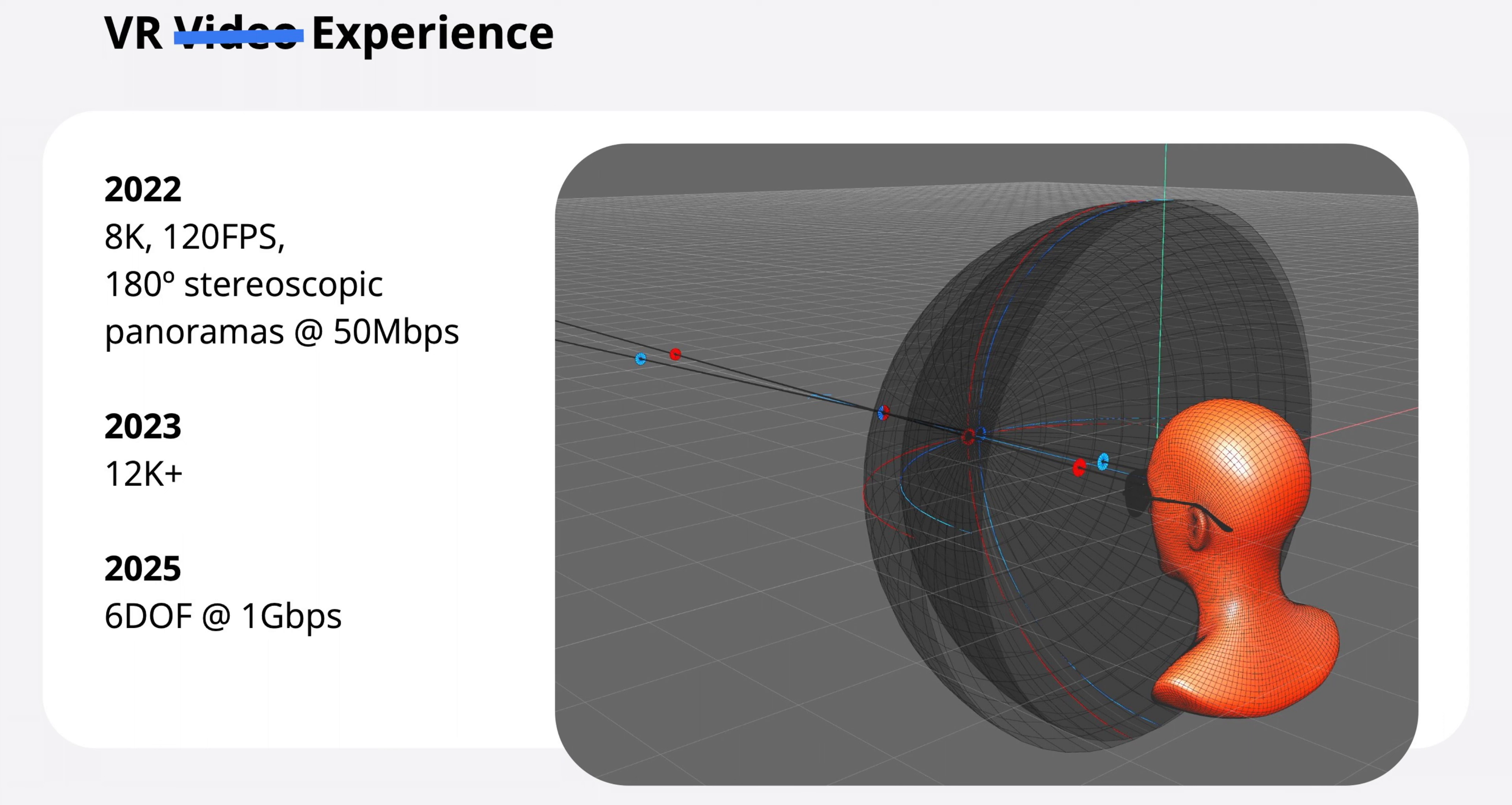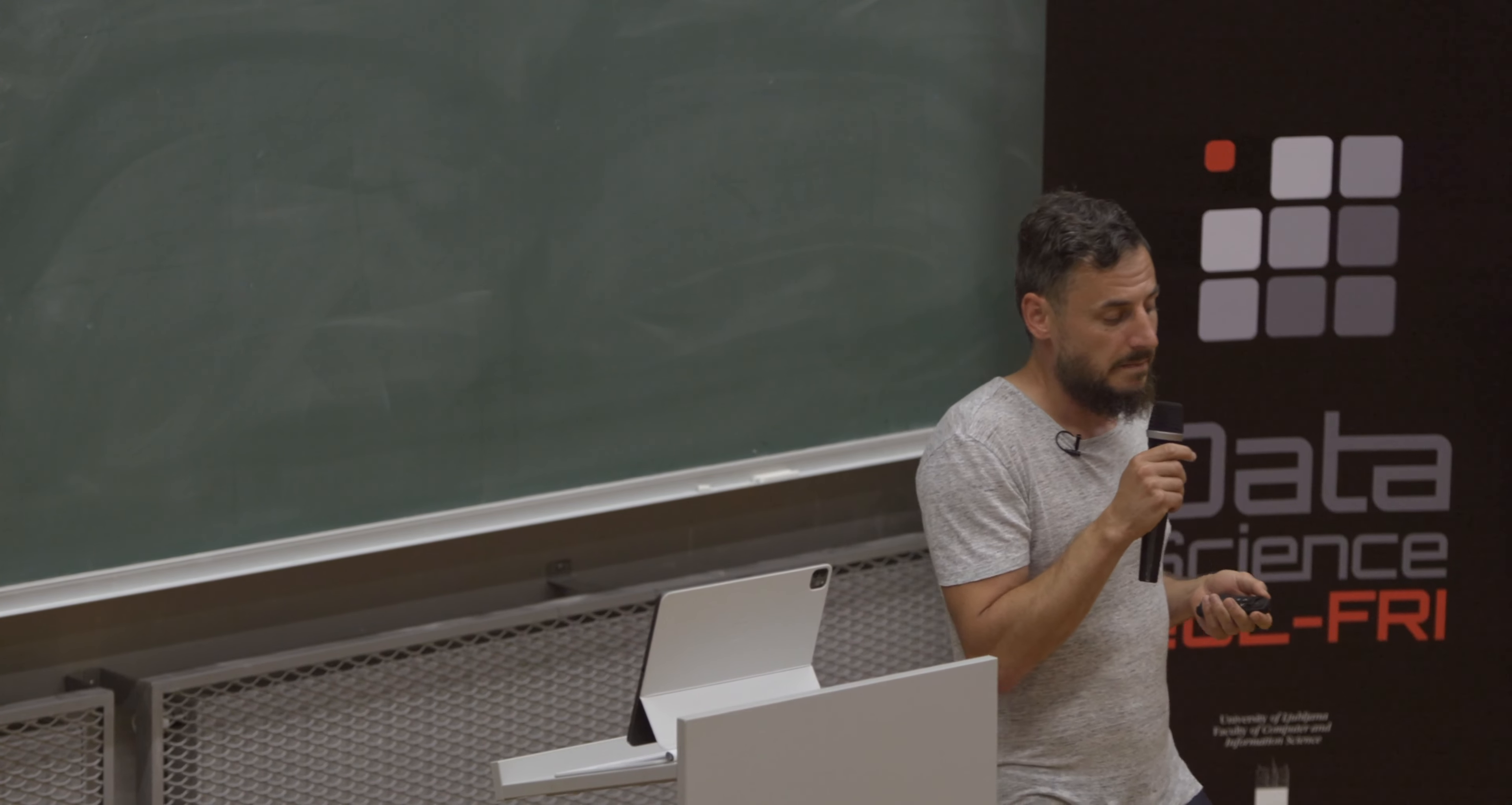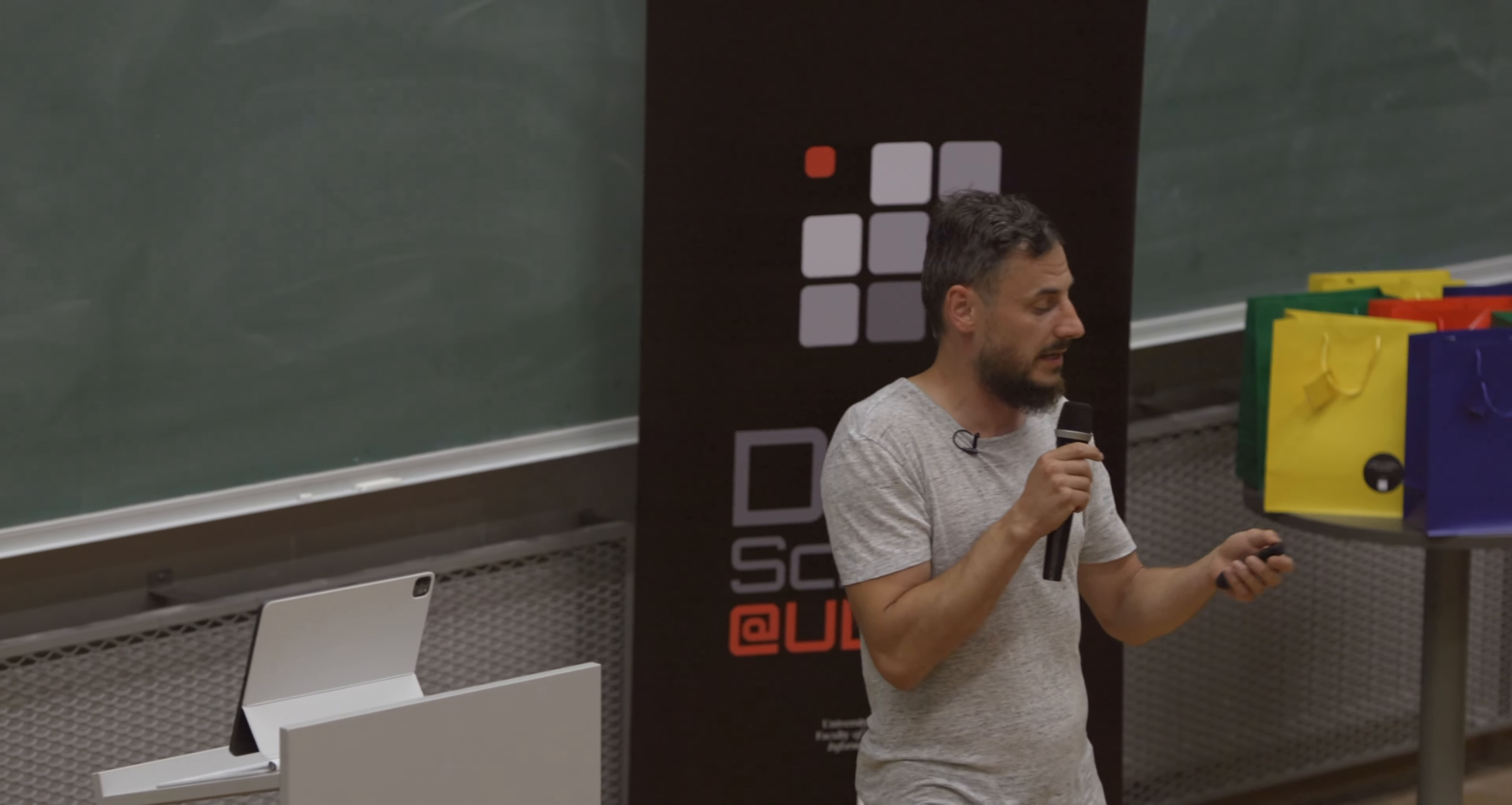And right now the standard for 2022 is 8K video and 120 FPS. YouTube is 4K, 30 FPS, just for some comparison. It's super high performance. It's basically 180 stereoscopic panoramas. And next year we expect 12K video to emerge. And then a bit later, we expect 6 degree of freedom video where you can move around and experience things like in real life.